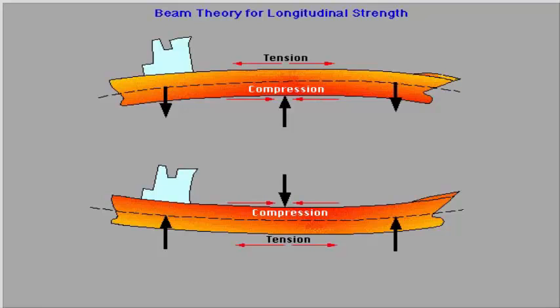When the ship is in hogged position, the deck plating will be in tension and bottom plating in compression. When the ship is in sagged position, the deck plating will be in compression and bottom plating in tension. The stress distribution will be at a minimum at the hull girder neutral axis being approximately half depth and maximum at deck and bottom.